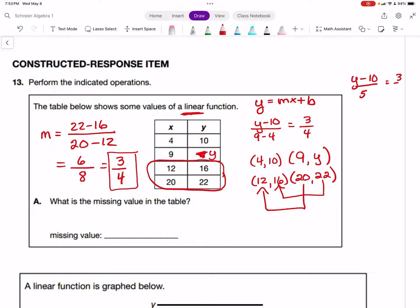We have a proportion and we're going to solve it. Cross-multiply: 4(y - 10) = 15, so 4y - 40 = 15. Add 40 to both sides: 4y = 55. Divide both sides by 4: y = 55/4, which as a decimal is 13.75. Your answer is 13.75.